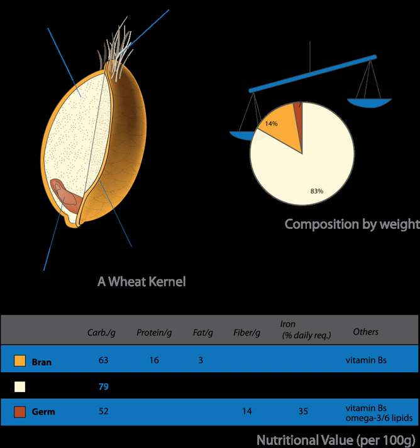Rice bran also contains a high level of dietary fibers — beta-glucan, pectin, and gum. In addition, it also contains ferulic acid, which is also a component of the structure of non-lignified cell walls. However, some research suggests there are levels of inorganic arsenic present in rice bran; one study found the levels to be 20% higher than in drinking water.